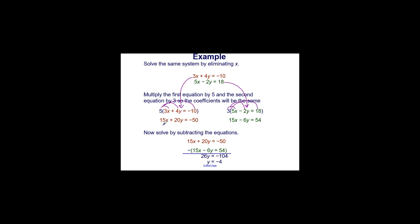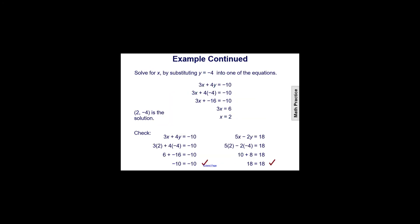Now we actually have the same coefficients of 15x and 15x, so we can subtract the two equations. No matter what, the x variable is eliminated. 15x minus 15x is 0x — it disappears. 20y minus negative 6y is really 20y plus 6y, so that's 26y. And negative 50 minus 54 is negative 104. Dividing both sides by 26, we get y equals negative 4.